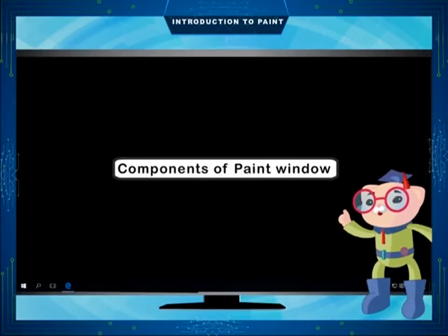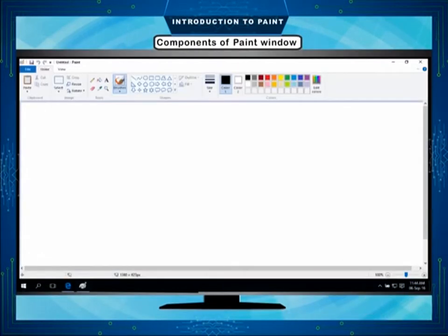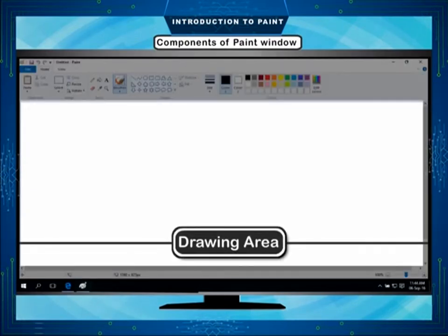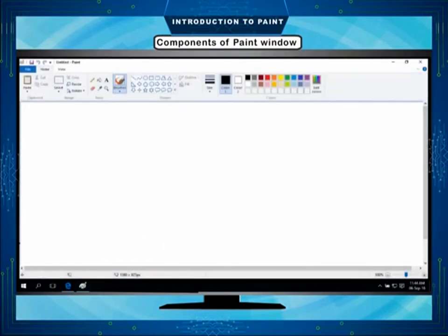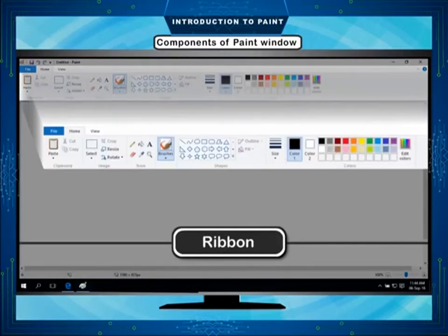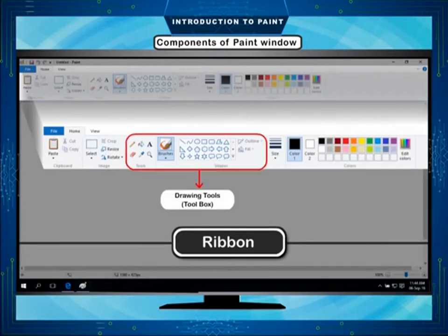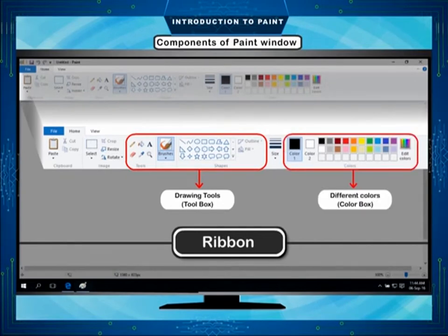Components of the Paint window. The Paint window has the following components. Drawing Area: The blank area in the center is called the drawing area. This is the part on which you can make any drawing. Ribbon: The ribbon in Paint includes a collection of drawing tools in the toolbox and a collection of different colors in the color box.